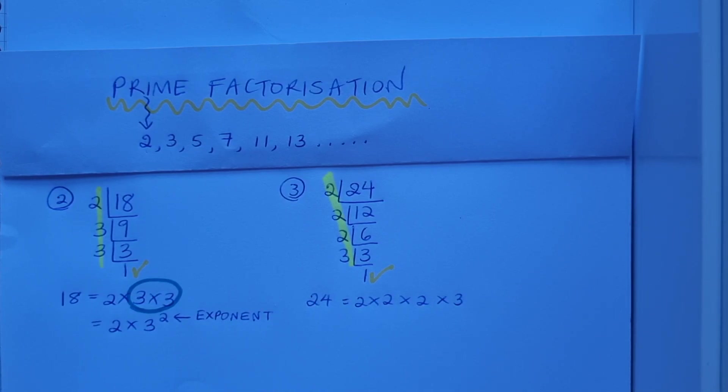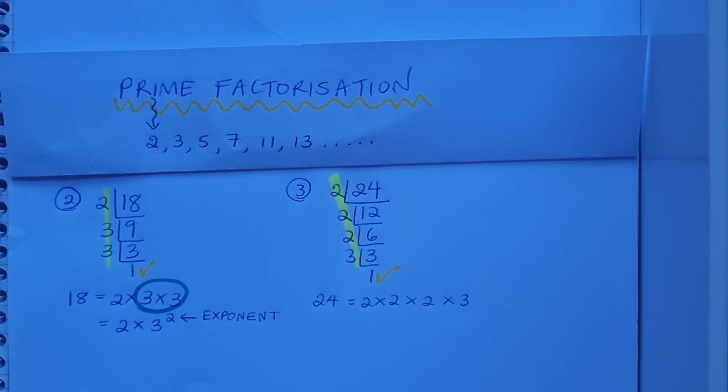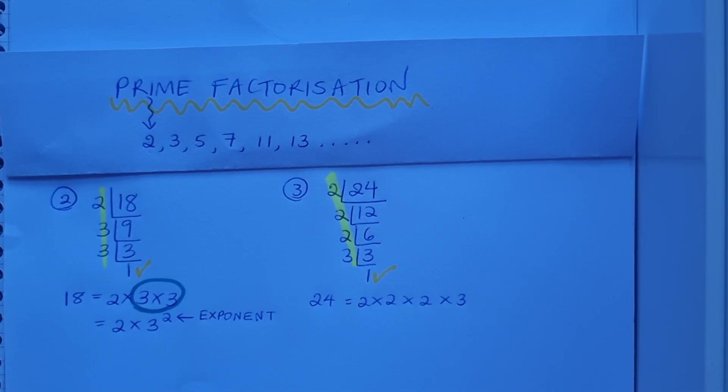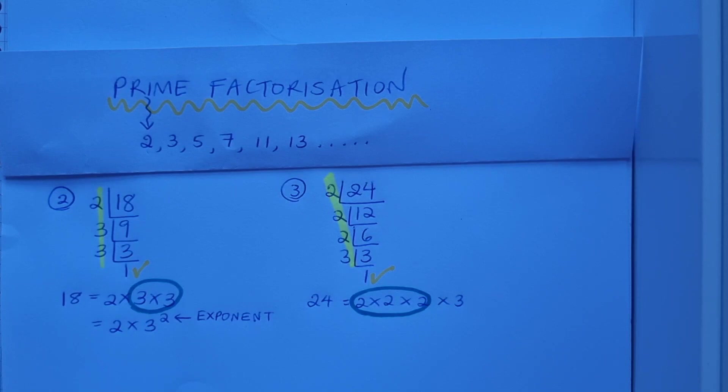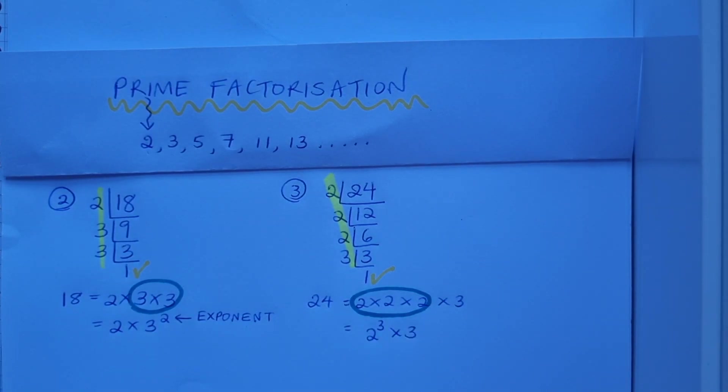Have a think now for a second yourself: is there a nicer, more condensed way that I can present this using exponents? Let's look at the 2's. I've got 2 popping up here 3 times in my multiplication, so I can use an exponent on that. I've got 2 to the power of 3 by 3.